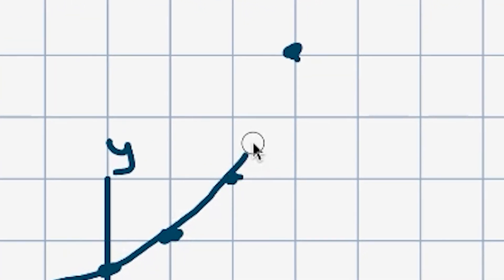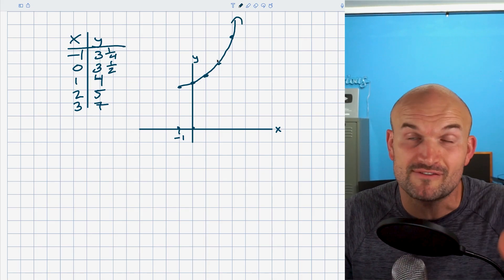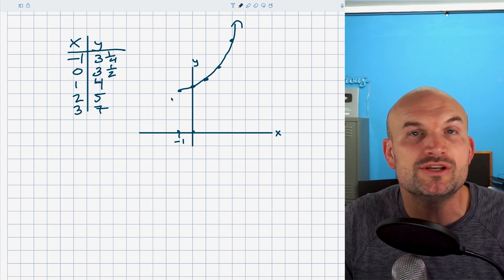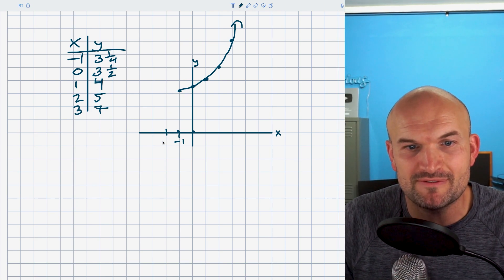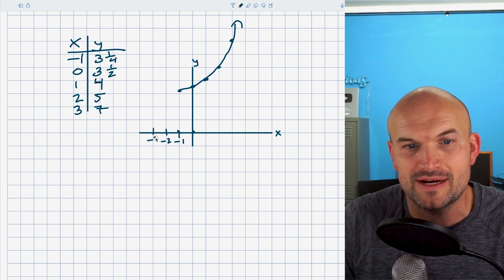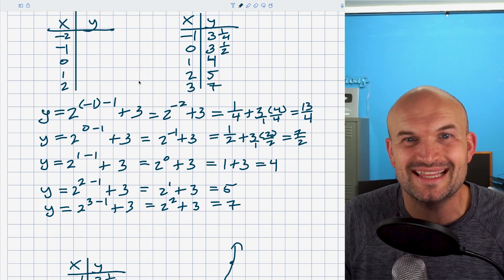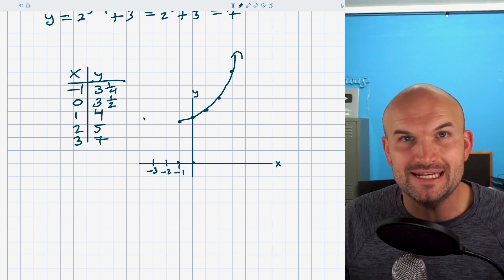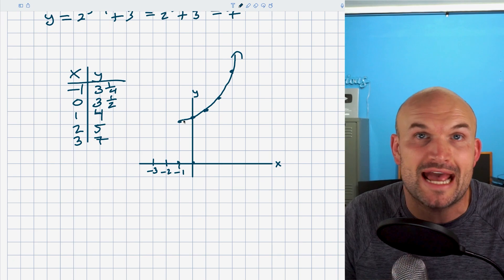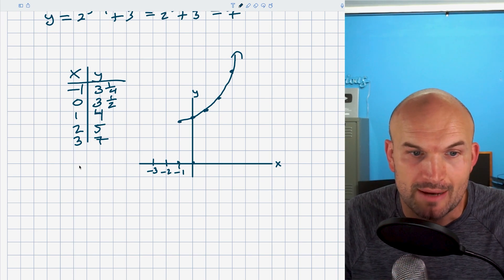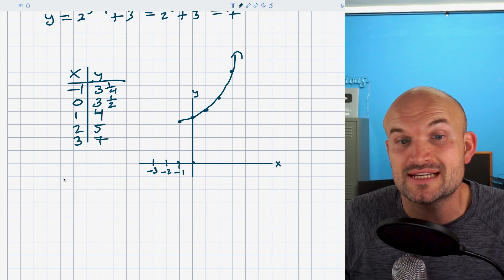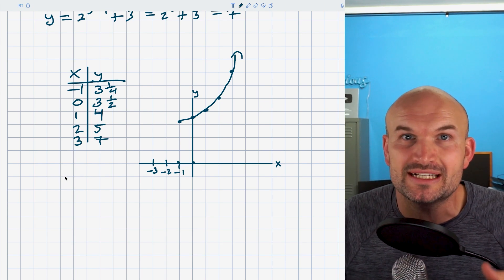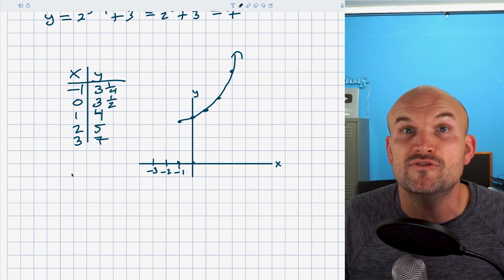The graph is going to start increasing very, very quickly to the right. But how do we handle what happens going to the left? If we have a general idea of what exponential functions look like, you might already know the answer. But if not, we need to go a little bit farther over. Let's check out values for x equals negative two and negative three. I didn't do this from the beginning because it's going to be kind of messy math, but we need to investigate what is actually happening to this graph as x goes more negative.